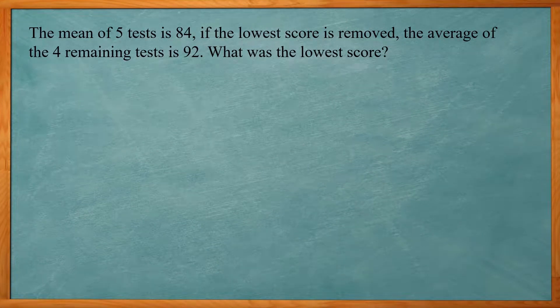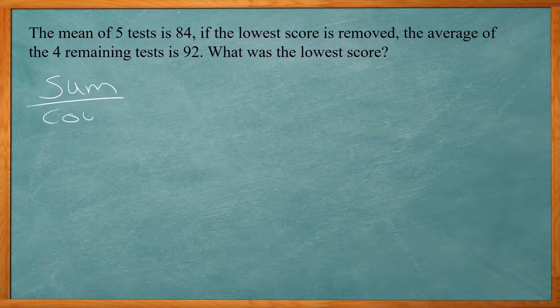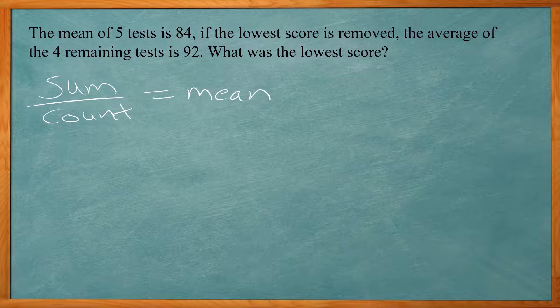So this one says the mean of five tests is 84. If the lowest score is removed, the average of the remaining four tests is 92. What is the lowest score? So we had five tests. Their mean was 84. If we remove the lowest score, now the mean is 92. So what was that score that we removed? So again, we're still using the sum over count equals the mean. Again, we don't have the five test scores. We don't have any of them. But we have this formula. We got, so what do we have? We have the mean, which is 84. We have the count, which is five. Do we have the sum?